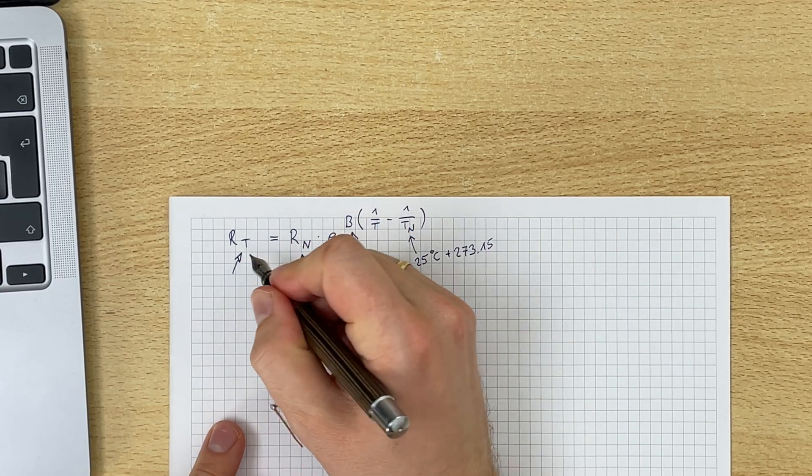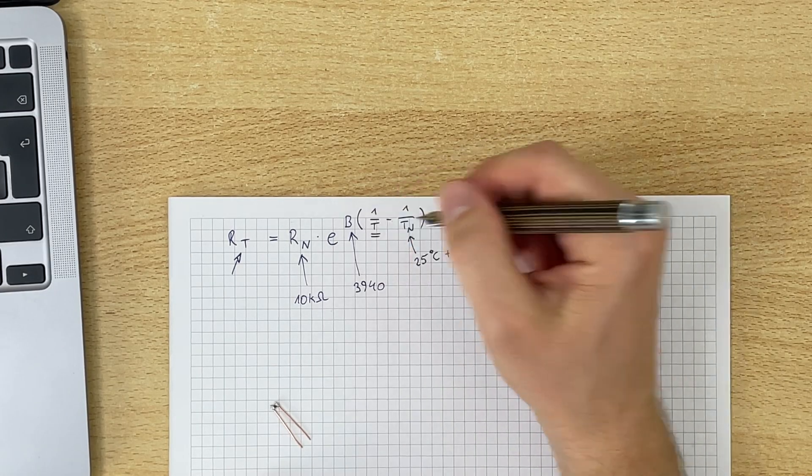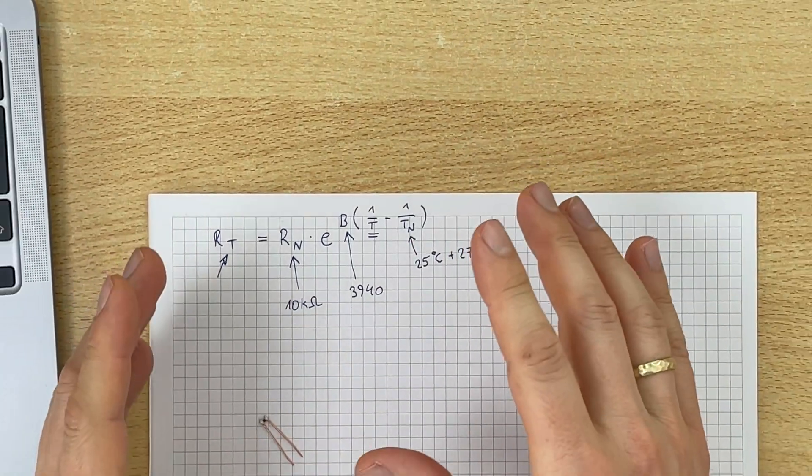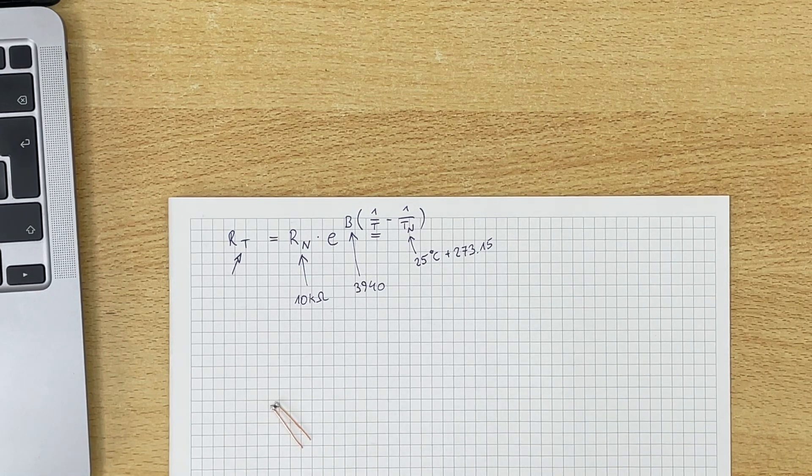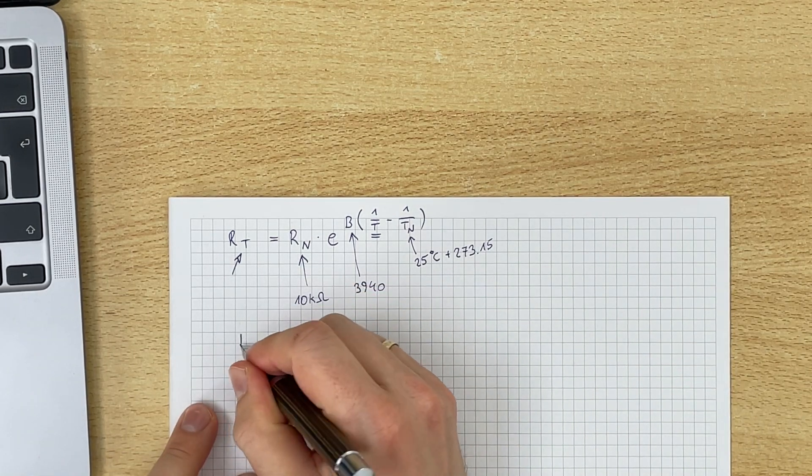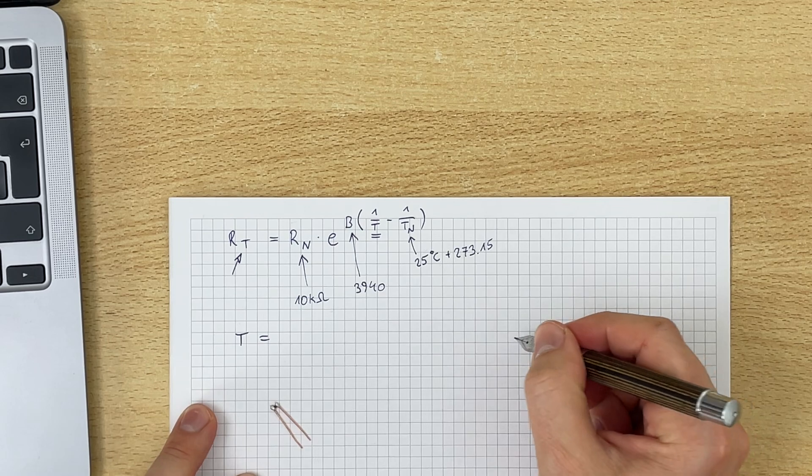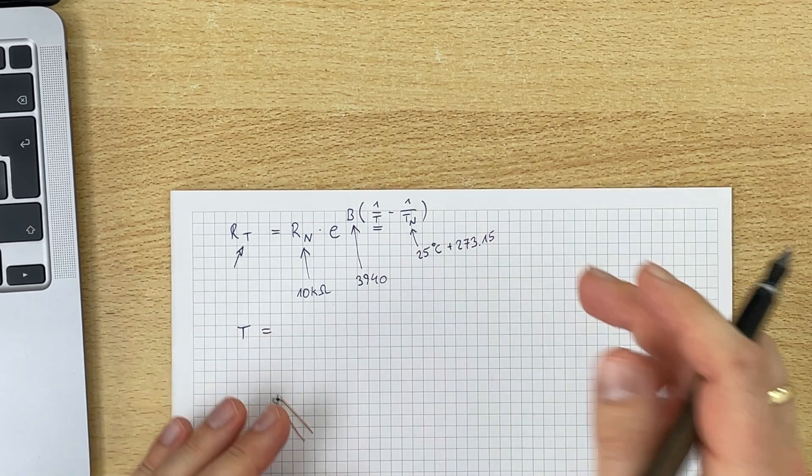Now here we need kelvin. We will measure this thing right here, and we are interested in the temperature. This is the temperature. So we need to transform the formula so that we get T equals something. But before we do that, I would like to first take a look at how we can measure the resistance with the Arduino.